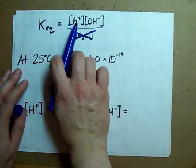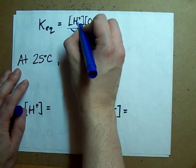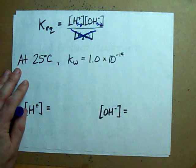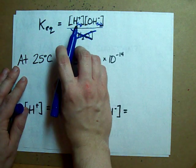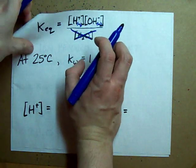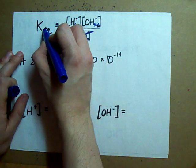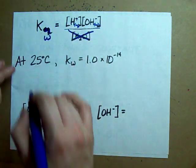It's just H-plus and OH-minus, the aqueous concentrations of those two ions. And when it's for this particular equilibrium, the equilibrium we just showed you here, it gets a special name. That special name is Kw.